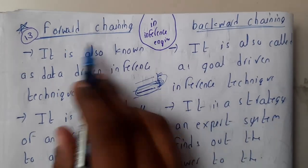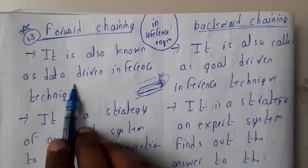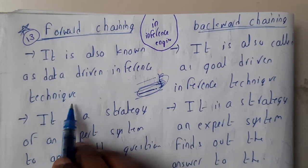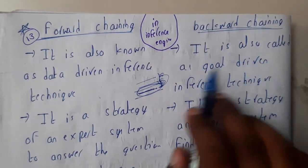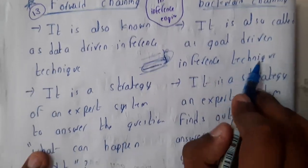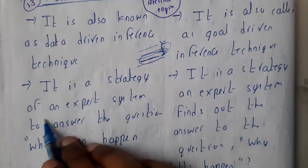Forward chaining is also known as a data-driven inference technique, whereas backward chaining is also known as a goal-driven inference technique. Forward chaining is a strategy of an expert system to answer what can happen — so it is talking about the future.